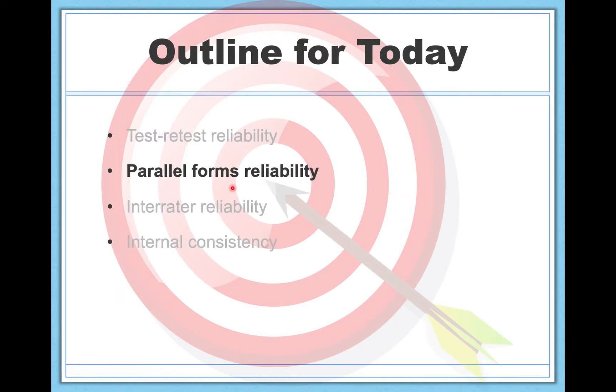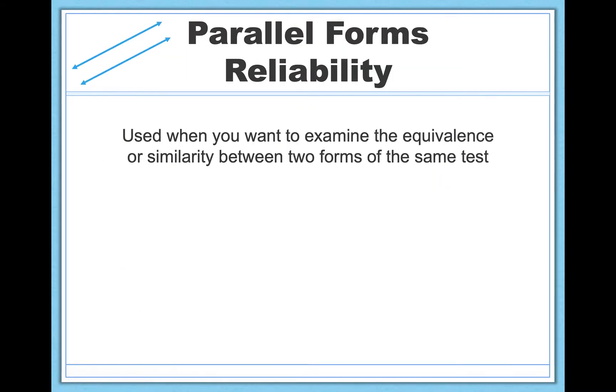So next, let's talk about parallel forms reliability. Parallel forms reliability is very similar, but it's a more specific, more unique case of test-retest reliability. Parallel forms reliability is used when you want to examine the equivalence or similarity between two forms of the same test. So, for example, if you're a teacher and you have a form A and a form B on the exam, you might want to know if those forms are equally difficult, if they're doing a good job of assessing the same concepts. Are they similar to one another?